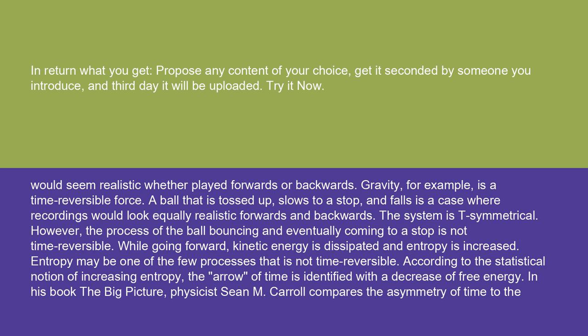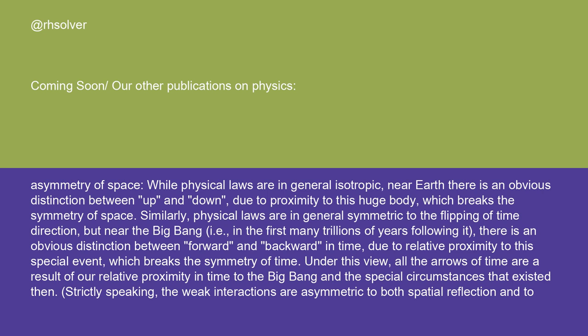In his book The Big Picture, physicist Sean M. Carroll compares the asymmetry of time to the asymmetry of space. While physical laws are in general isotropic, near Earth there is an obvious distinction between up and down due to proximity to this huge body, which breaks the symmetry of space. Similarly, physical laws are in general symmetric to the flipping of time direction, but near the Big Bang — in the first many trillions of years following it — there is an obvious distinction between forward and backward in time due to relative proximity to this special event, which breaks the symmetry of time.